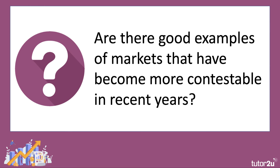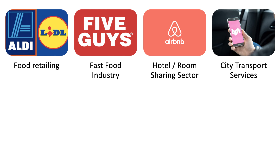Are there good examples of markets that have become more contestable recently? Yes — and they're typically chosen by exam boards because there's a lot of interesting economics. In food retailing, the rise of deep discounters Aldi and Lidl, now taking around 13–15% of UK grocery market share, poses a significant competitive threat to Sainsbury's, Asda, and Tesco. The fast food sector has lots of new entrants — Five Guys challenging Burger King and KFC. Airbnb has disrupted the hotel sector, and cities now have a choice of transport apps including Uber and Lyft.